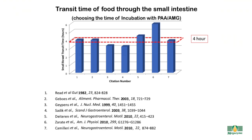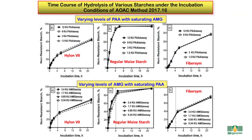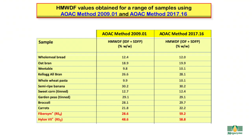The time of residence of food in the small intestine has been studied extensively, and the average time would seem to be 4 hours, generally varying between 3 and 5 hours. So in the modified dietary fibre procedure, a 4-hour incubation period was chosen. Having decided on a 4-hour incubation time, the levels of pancreatic alpha-amylase and amyloglucosidase were then optimised such that the resistant starch values obtained for a number of reference samples were in line with values published by ileostomy studies.